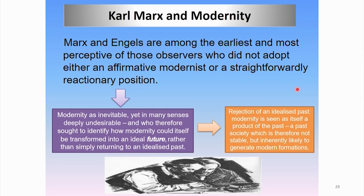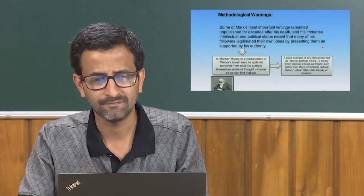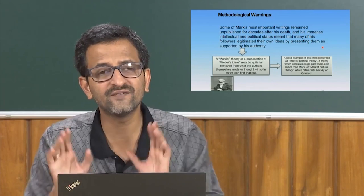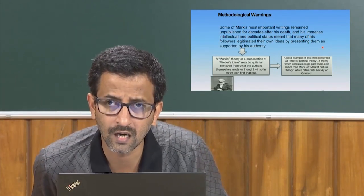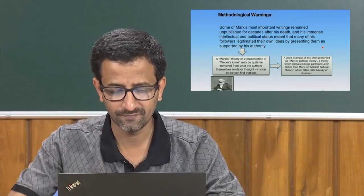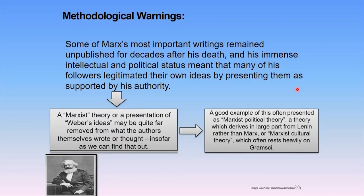When we look at Marx and modernity, there are certain methodological warnings. A word of methodological caution before we start: Marx and, to a lesser extent, Weber is a classic example of the difficulties involved in saying what so-and-so thought. Marx, like Weber, was immensely prolific. Some of his most important writings remained unpublished for decades after his death. His immense intellectual and political status meant that many of his followers legitimated their own ideas by presenting them as supported by his authority.